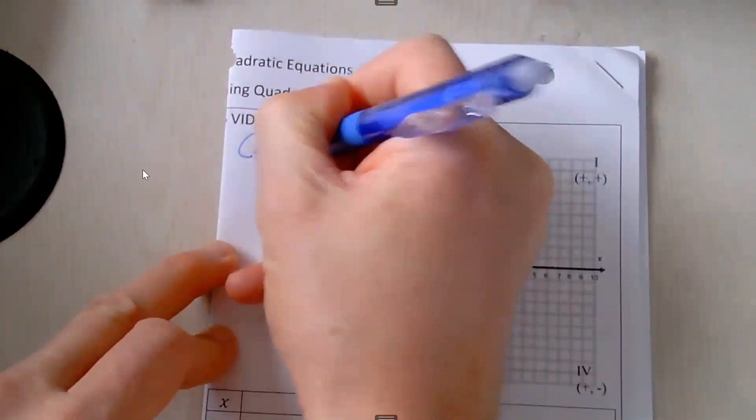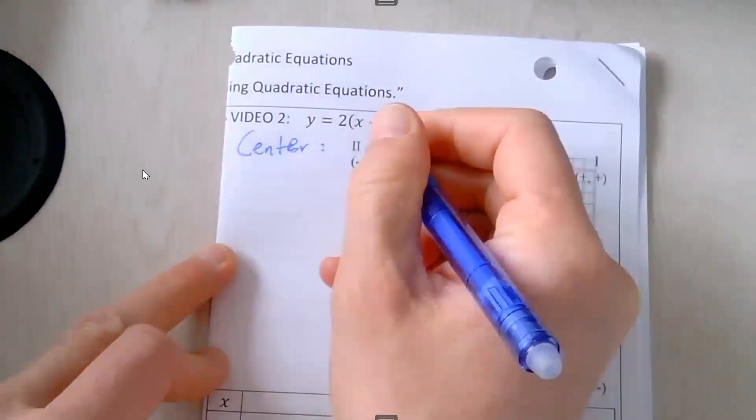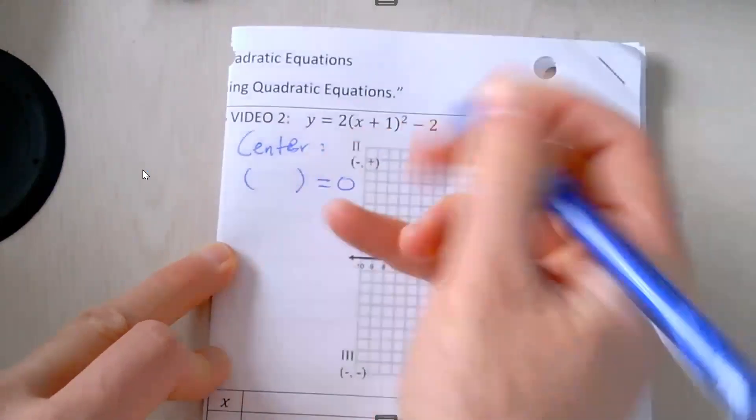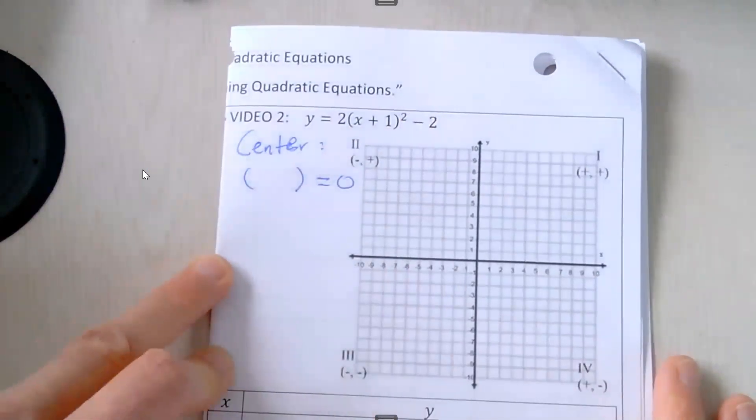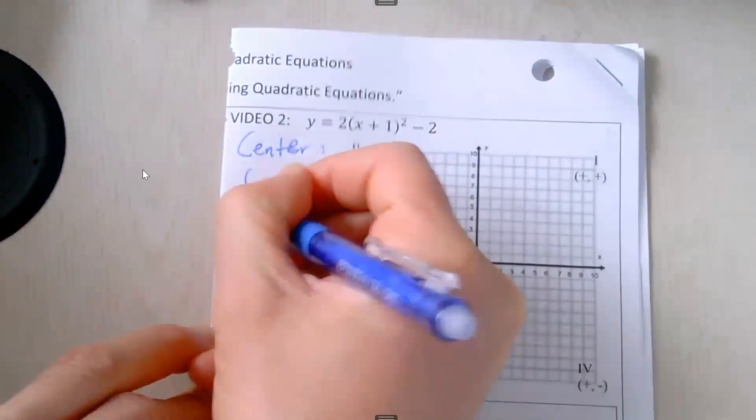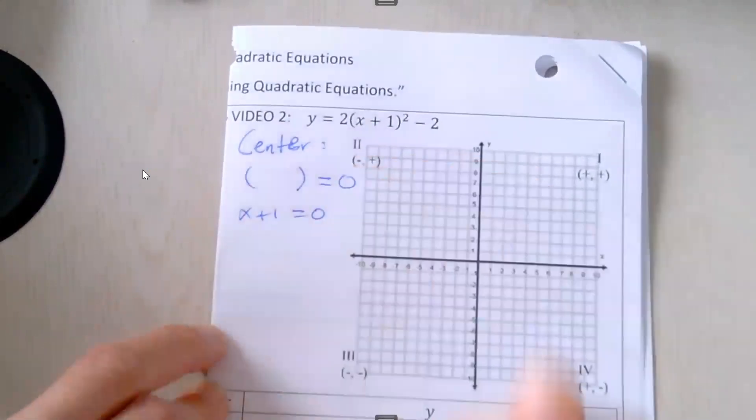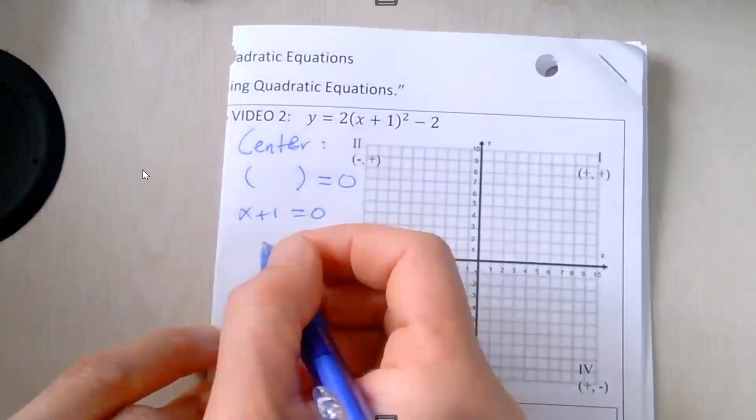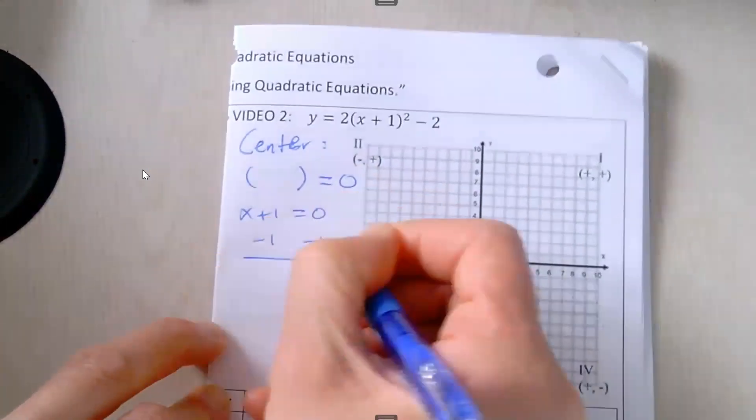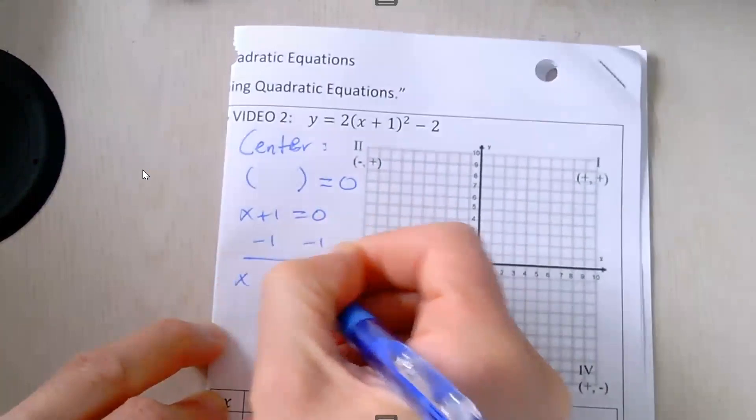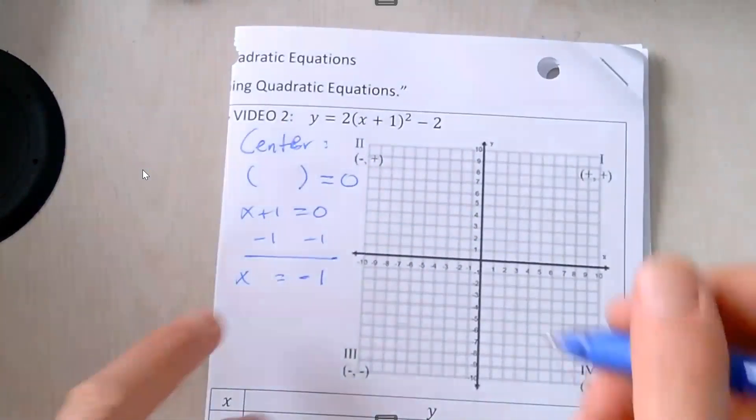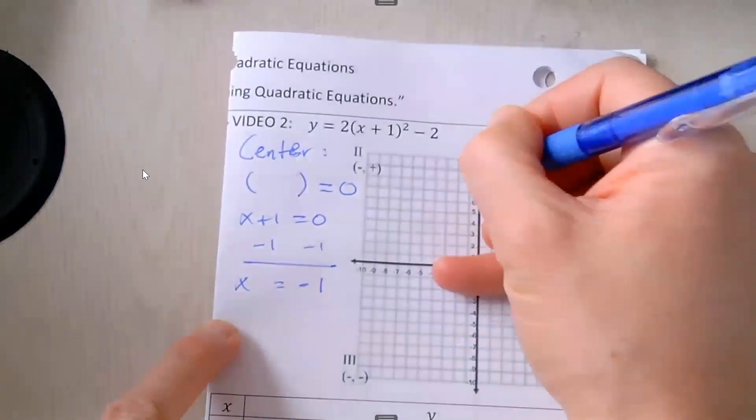Find the center. We're going to take what's in parentheses and set that equal to zero and solve for x. So the thing that's in parentheses here is x plus 1. Now use inverse operations. So subtract 1 from both sides, and get that x equals negative 1. That's where the center of our quadratic is going to be.